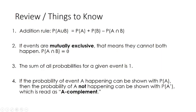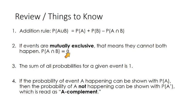Just a quick review of things to know: the addition rule states that the probability of A or B happening is equal to the probability of A plus the probability of B minus the probability of A and B. We also need to know the definition of mutually exclusive — if we have mutually exclusive events, that means the probability of both A and B happening is zero. And the sum of all probabilities for a given event is one. If you find all the different outcomes and add up the probability of each, that should total to 100% or one.